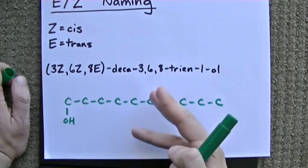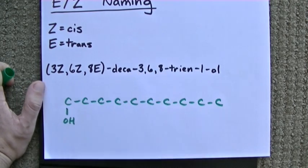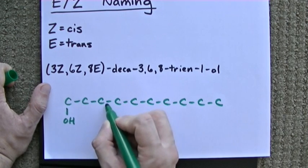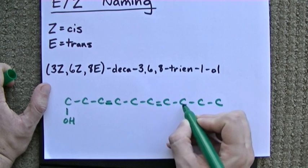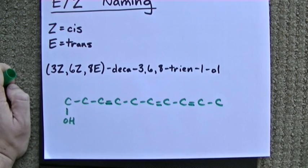Now I need to start putting in double bonds starting at carbons 3, 6, and 8. 1, 2, 3, 4, 5, 6, 7, 8. There are my three double bonds.